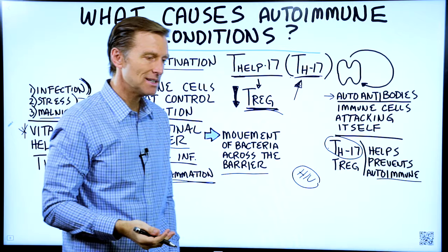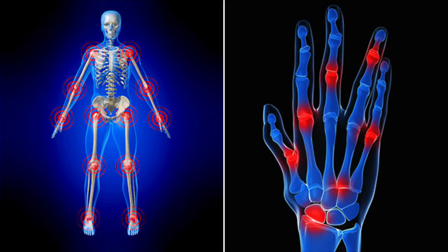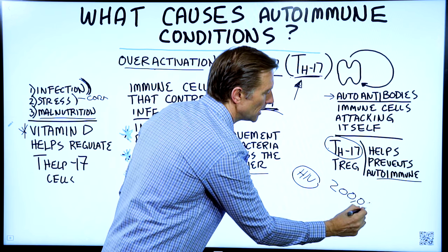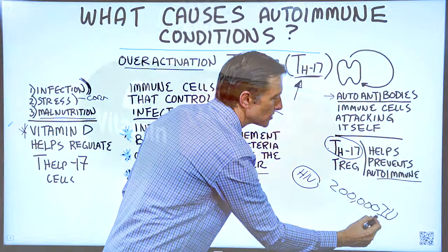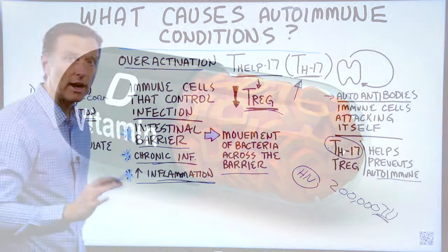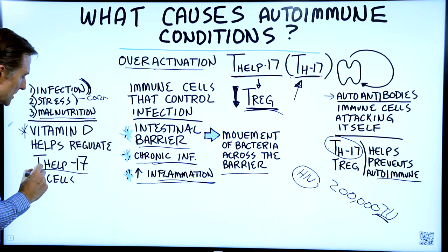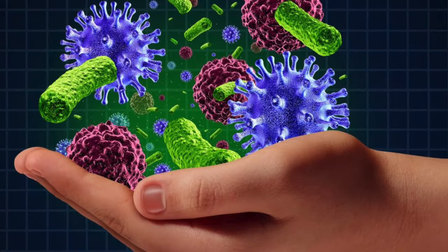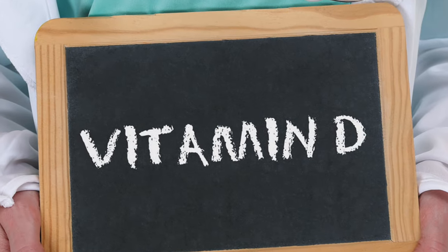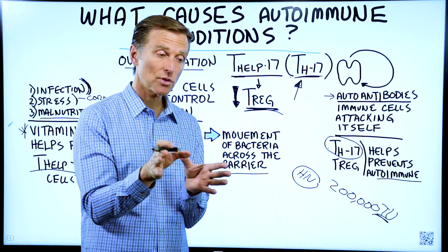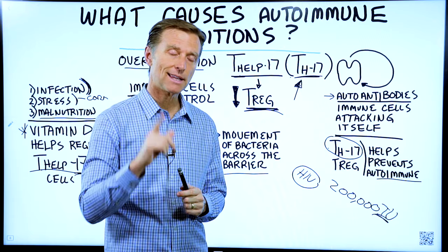This is why vitamin D, even in the 1940s, was used for rheumatoid arthritis — at doses of 200,000 to 400,000 international units to put that condition in remission. Vitamin D helps to regulate the T helper cells, specifically the Th17 cell involved in autoimmune disease. If you have an autoimmune condition, you should be taking vitamin D, and you definitely need to research that area. There are some interesting links in the description below.